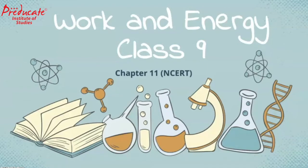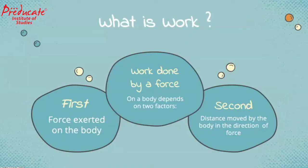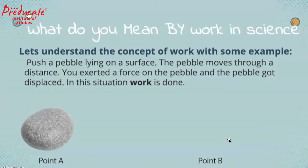Let us start with work. In science, what is work? Work done by a force on a body depends on two factors. First, force exerted on the body. And second, distance moved by the body in the direction of force. Therefore, work is said to be done when a force is exerted on a body and that body is displaced in the direction of force.